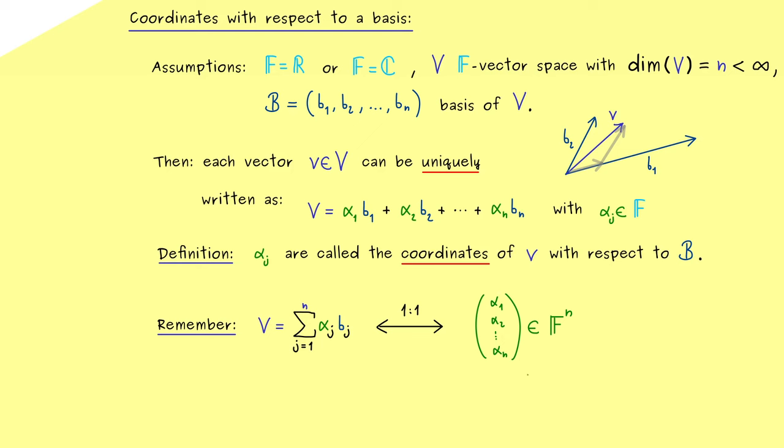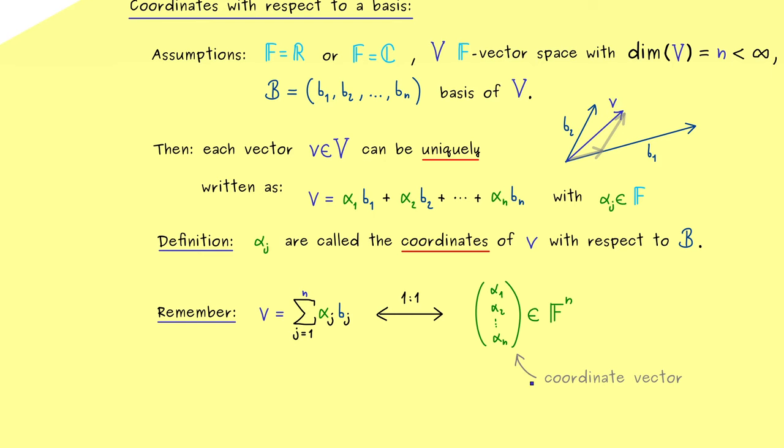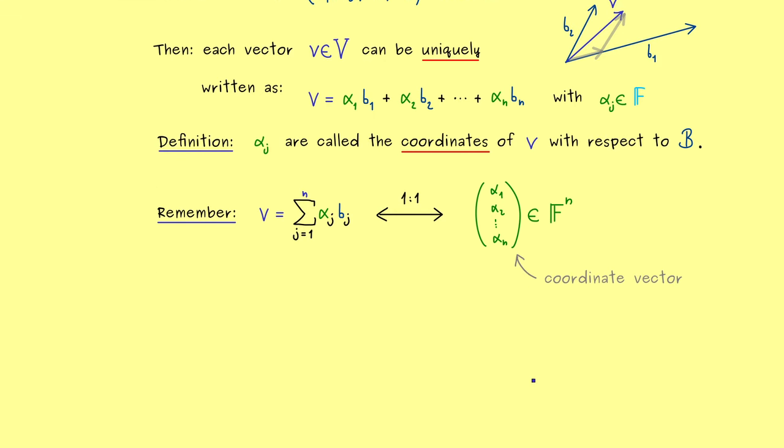And usually this column vector here on the right hand side in Fn we call the coordinate vector of v. And with that you should get the general idea: we want to translate everything from the abstract vector space V into this concrete one Fn. And then here in Fn we can use the full power of our linear algebra knowledge. Therefore I would say it's helpful to put this whole idea into a picture.